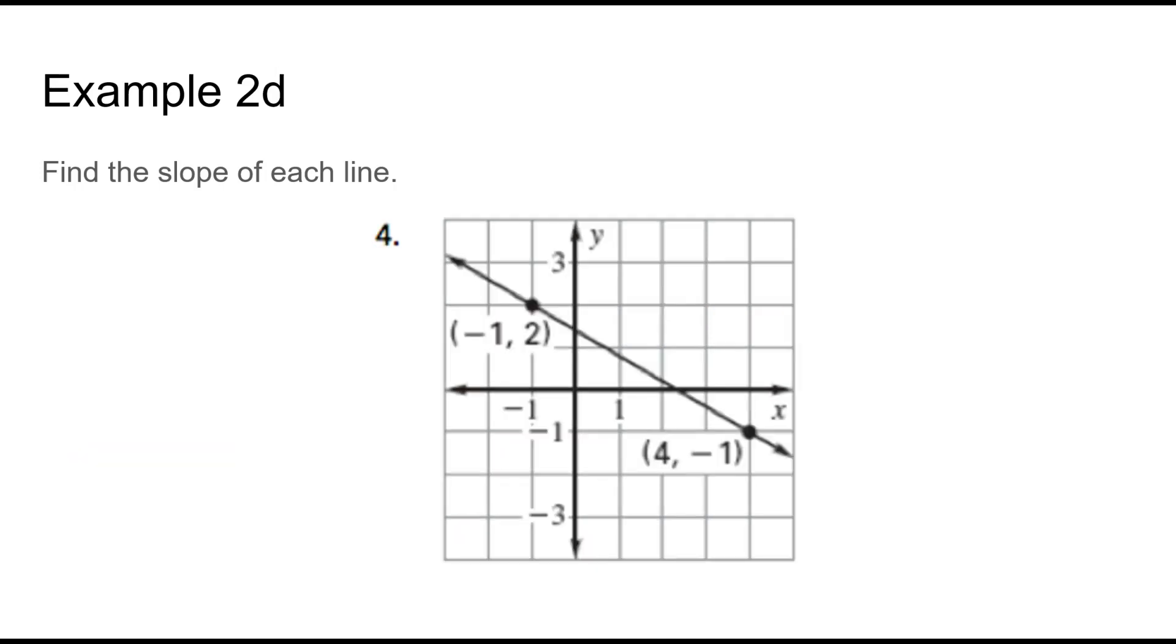Last one together. Find the slope of this line. We're calculating from left to right. We're finding there's a point there. There's a point there. I start at this point here and I say up or down. My rise would be negative 1, 2, 3. And I run 1, 2, 3, 4, 5. Positive 5 because I went to the right. So my slope is negative 3 over 5.